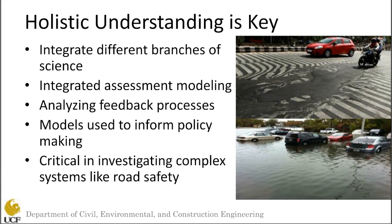One of the difficulties of investigating complex systems like road safety is that the interactions between different parameters playing any role within the system are very often neglected. This oversight becomes even more serious when the system and its parameters are dynamic in nature and when parameters are time-dependent. Therefore, a comprehensive system dynamic model to help policymakers find ways to reduce road fatalities and injuries should be capable of identifying all parameters related to road safety and should also take into account the relationships and interactions between all of these parameters.